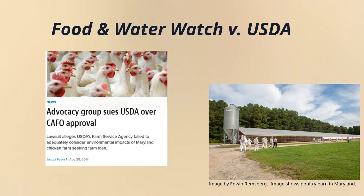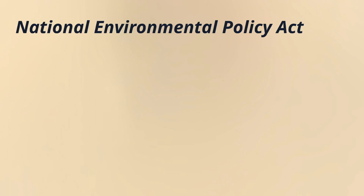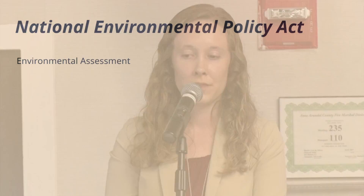The first one is the Food and Water Watch v. USDA case. This complaint is a very recent one that is about an FSA guaranteed loan of a poultry operation on the Eastern Shore here in Maryland. It was filed in the DC District Court recently and it's challenging FSA's environmental assessment and finding of no significant impact of the approval of that guaranteed loan. They're saying that it violated the National Environmental Policy Act, which requires that all federal agencies assess the environmental impact of any proposed action that will significantly impact the human environment.